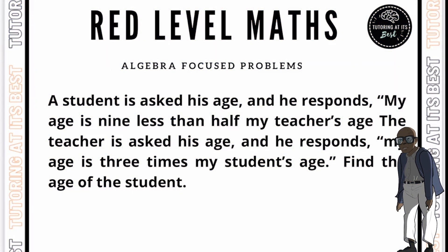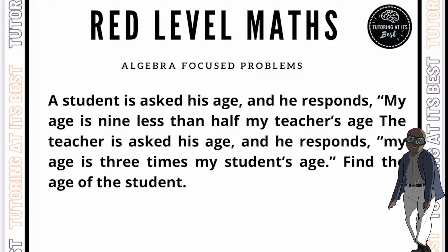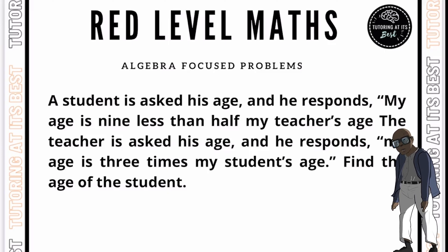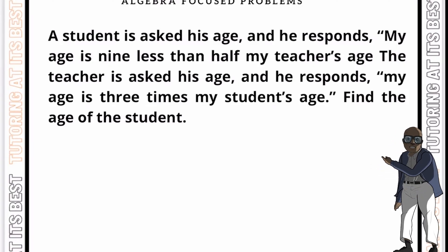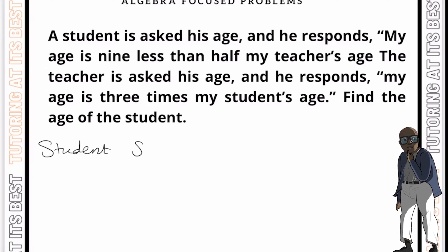A student is asked his age and he responds, my age is nine less than half my teacher's age. The teacher is asked his age and he responds, my age is three times my student's age. So find the age of the student. Well, let's call the age of the student S and the age of the teacher T.